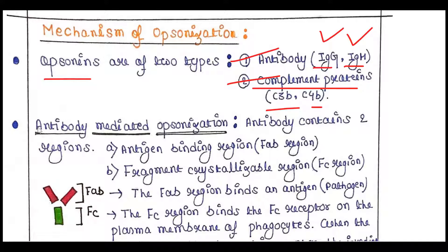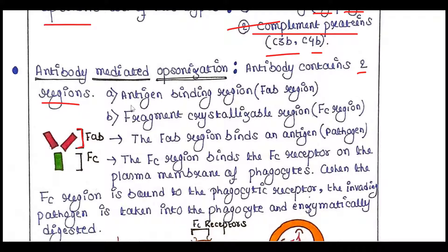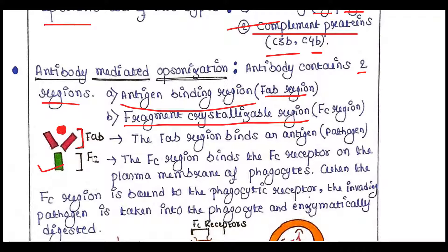In antibody-mediated opsonization, the antibody contains two regions. First is the Fab region, which is the antigen-binding region — this Fab region binds the antigen or pathogen. Second is the Fc region, the fragment crystallizable region. The Fab region binds the pathogen and the Fc region binds the Fc receptor on the plasma membrane of phagocytes.